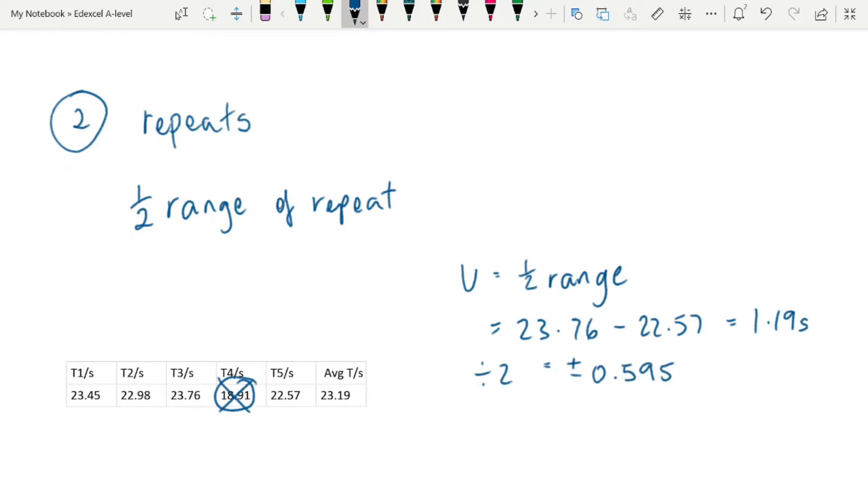Now you cannot write your uncertainty as 0.595 because that is 3 decimal places. And our raw data is to 2 decimal places, so you have to write it as 0.60 seconds, and that's going to be a plus or minus.